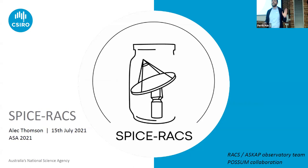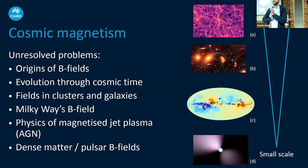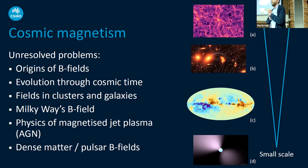Hi everyone, my name is Alec Thompson. I'm a postdoc at CSIRO, here on behalf of the ASKAP observatory team as well as the POSSUM collaboration to talk about the latest and greatest coming up in continuum surveys and full polarization from ASKAP. Magnetic fields permeate throughout the entire universe — no matter which part you're interested in, magnetic fields will be hanging around there. Observing these magnetic fields can be hard because we don't have a direct tracer.